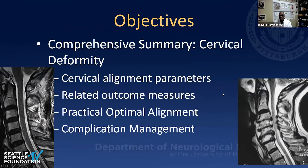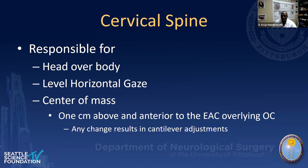Looking at a comprehensive summary of cervical deformity, I wanted to talk about the alignment parameters, the related outcome measures, practical optimal alignment, and complication management. The cervical spine is responsible for keeping the head over the body and also for helping level your horizontal gaze. It controls part of the center of mass in relation to the rest of the body.